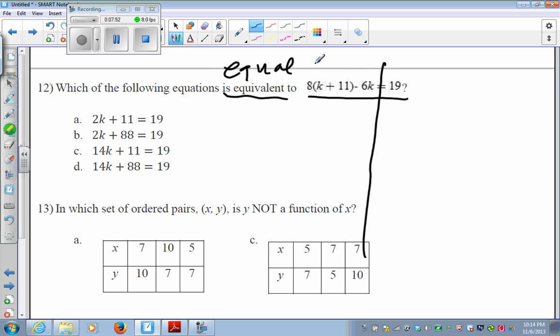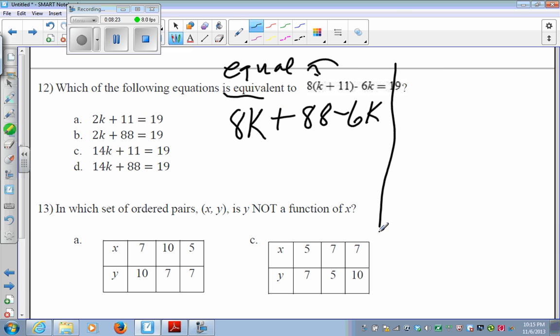I've got this 8 on the outside of the parentheses, so I'm going to distribute it to what's inside the parentheses. 8 times k is an 8k. 8 times 11 is plus 88. I'm just going to bring down my 6k. And then the 19 is over on the other side of the equal sign all by itself. Now, I can do 8k minus 6k, which is going to leave me with a 2k plus 88 is equal to 19.